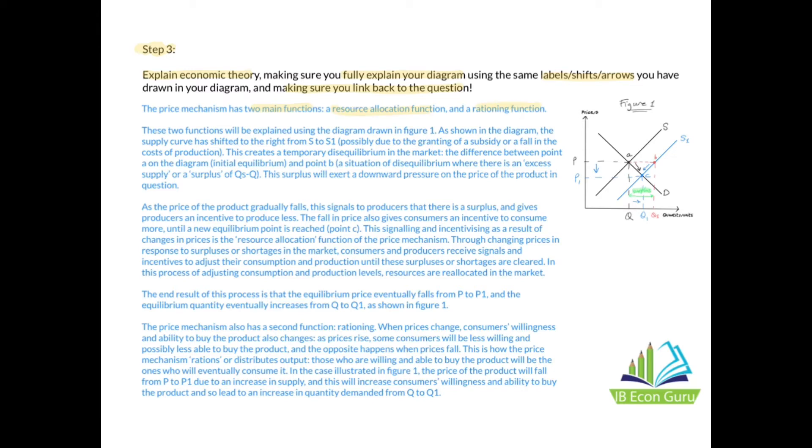I wrote something like: The price mechanism has two main functions—a resource allocation function and a rationing function. These two functions will be explained using the diagram drawn in Figure 1. As shown in the diagram, the supply curve has shifted to the right from S to S1—you'll see I'm using the same labels I have drawn in the diagram. That's why we label the diagram, so it makes it easier to explain and refer back to it. Between parentheses I said, 'possibly due to the granting of a subsidy or a fall in the cost of production,' just to give some context to why supply may have increased. This creates a temporary disequilibrium in the market—the difference between point A on the diagram (the initial equilibrium) and point B, a situation of disequilibrium where there's an excess supply or a surplus of QS minus Q. This surplus will exert a downward pressure on the price of the product in question.